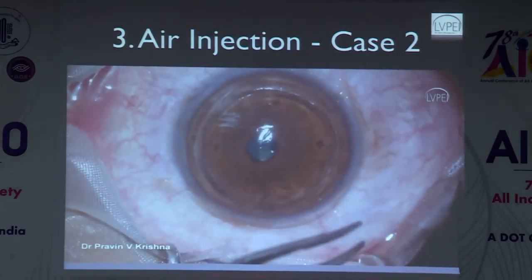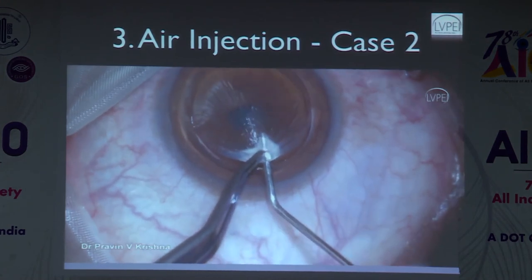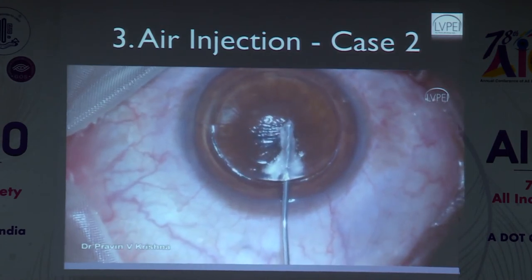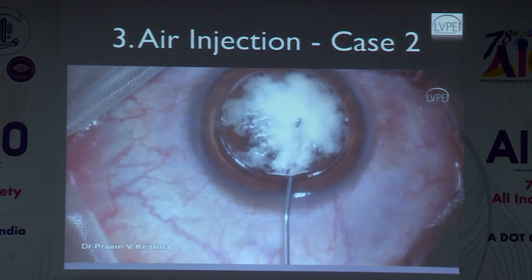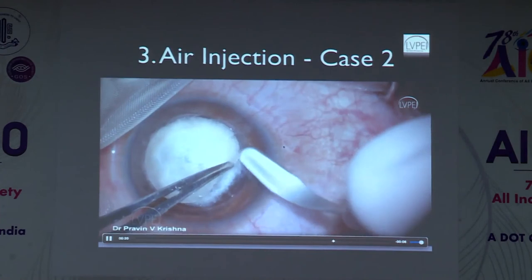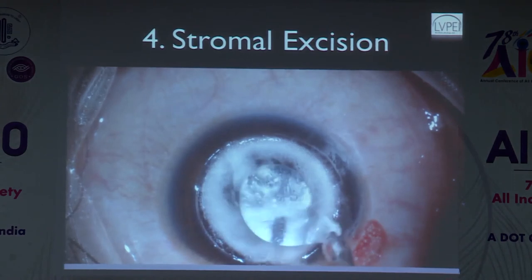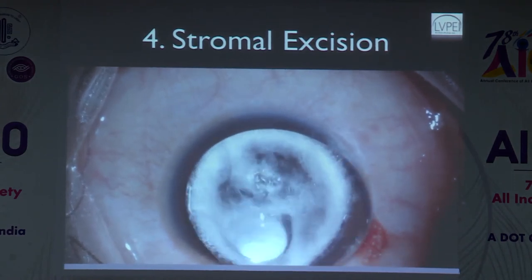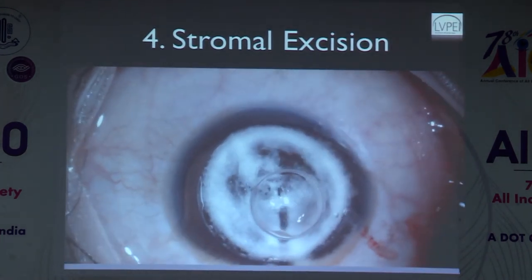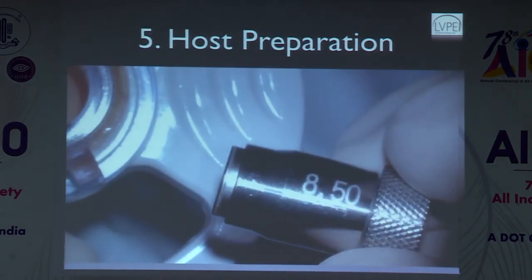Once you see bubbles, you can see the Fleischer's ring on the surface, confirming you have the entire cone. Create access to the bubble area by placing viscoelastic and entering the stroma to release the air bubble, going into the Dua's layer area to begin tissue excision. Use a 0.25 disparity for all keratoconus cases — this gives precise measurement and greater disparity causes more post-op myopia.